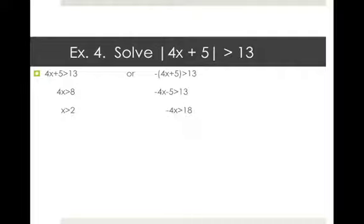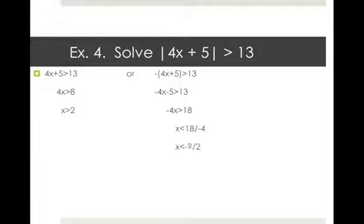For our second inequality statement, we distribute the negative to get negative 4X minus 5 greater than 13. We add 5 to both sides to get negative 4X greater than 18. We need to divide by negative 4 — remember, you have to reverse the inequality direction when you divide by a negative. So we get X less than 18 divided by negative 4, which reduces to X less than negative 9 halves.